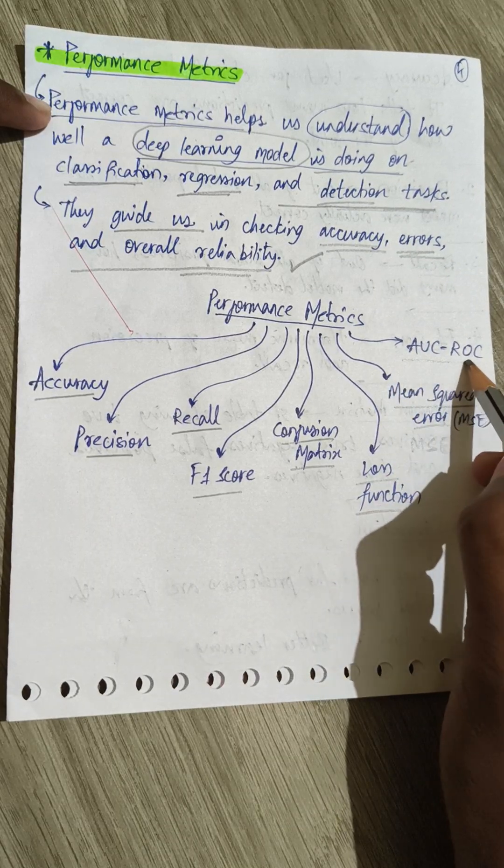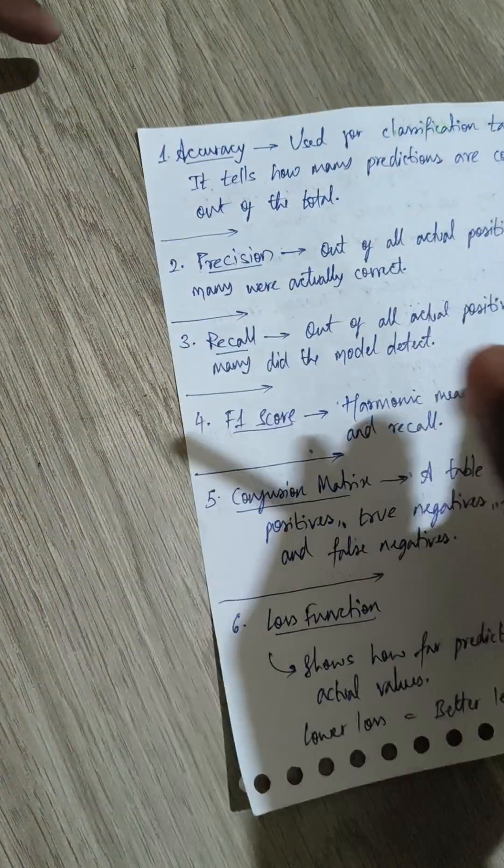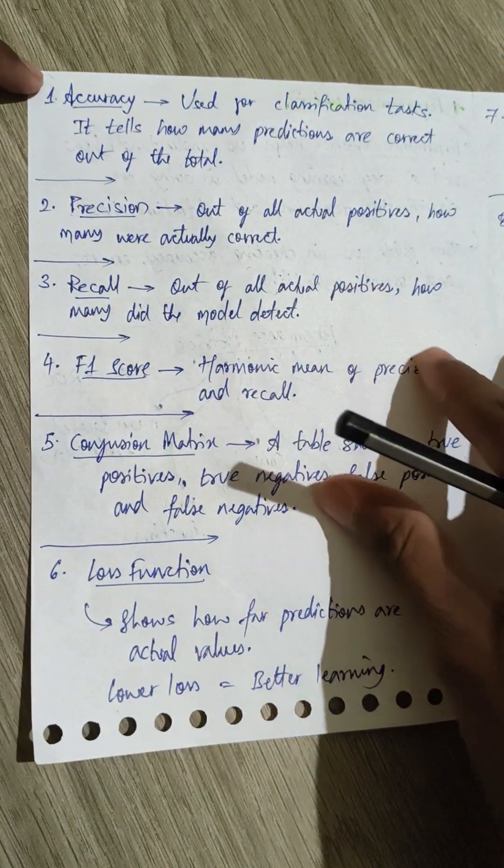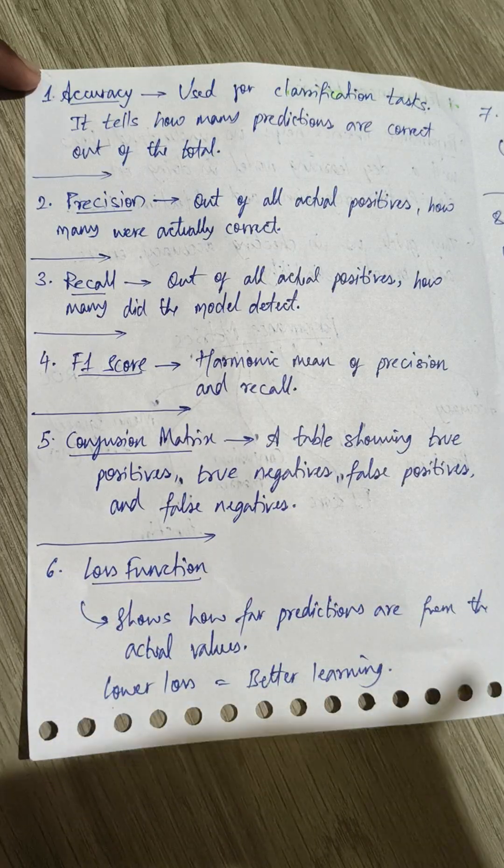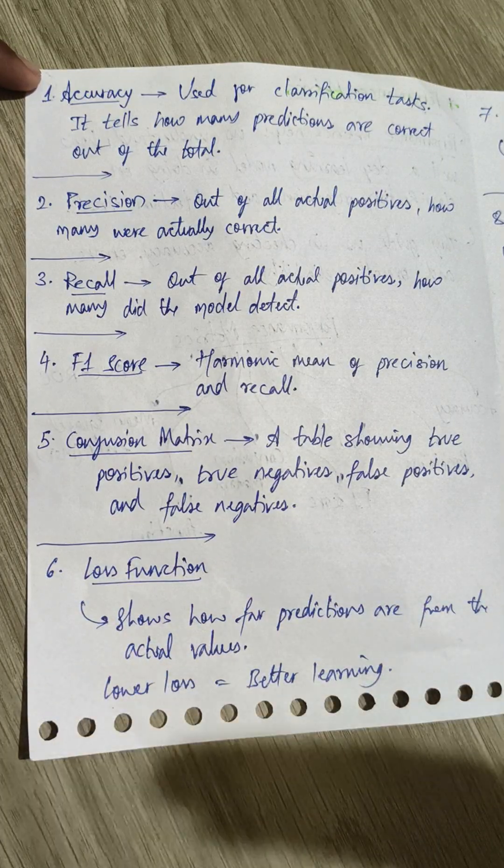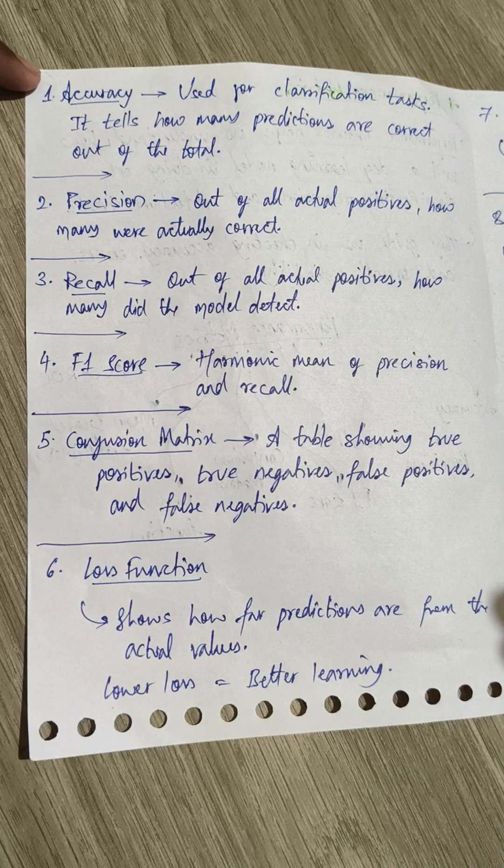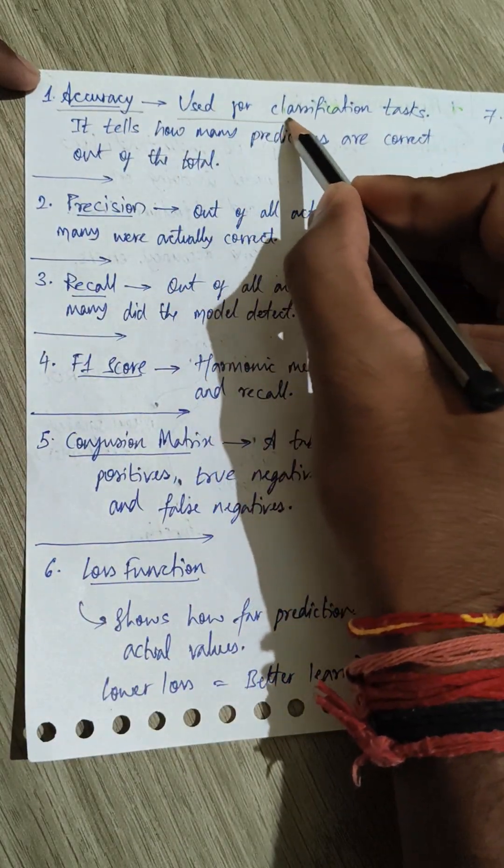And the last one is AUC-ROC. Now let's understand what is accuracy, precision, recall, F1 score, confusion matrix, loss function, mean squared error, and AUC-ROC. Coming to the first one, that is accuracy. Accuracy is used